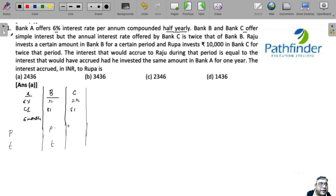Rupa invested Rs. 10,000 in Bank C for twice that period. So Rupa must have invested in simple interest for twice that period.